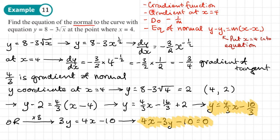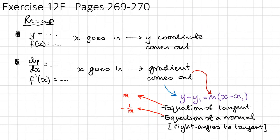There are quite a few steps in these questions. When you start doing them yourself, it's useful to write out the steps so you know what you're doing at each stage and don't miss anything. You should now be able to do exercise 12F on pages 269 to 270 in the textbook.